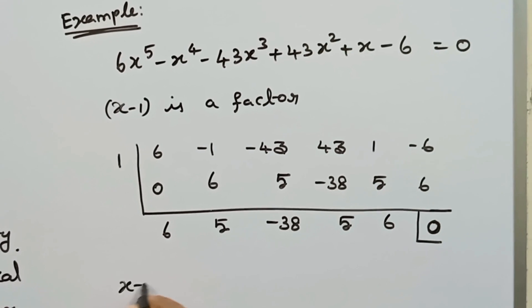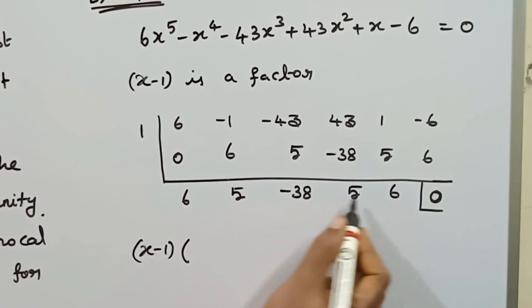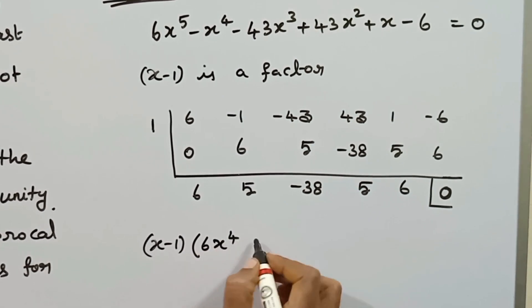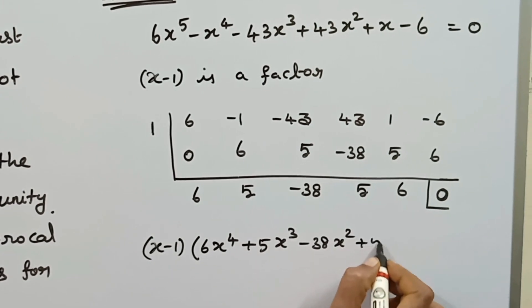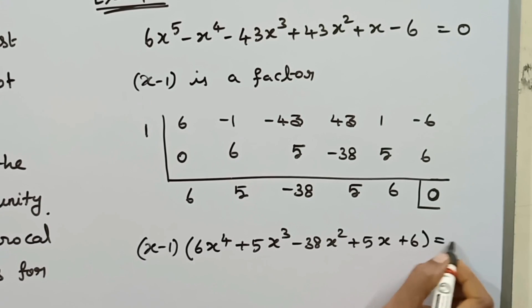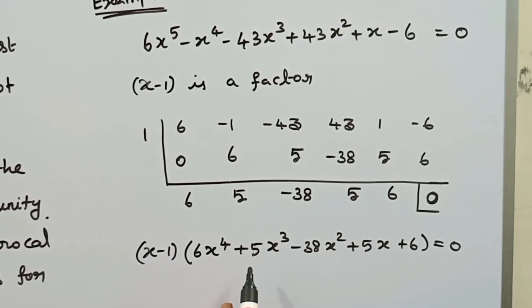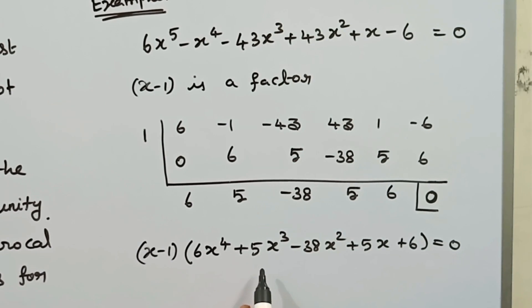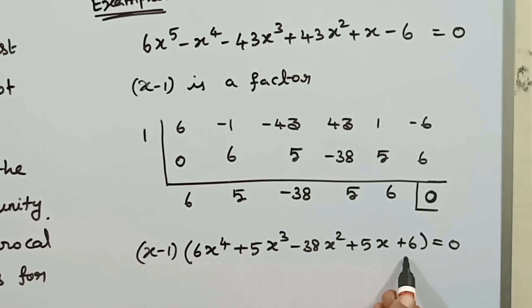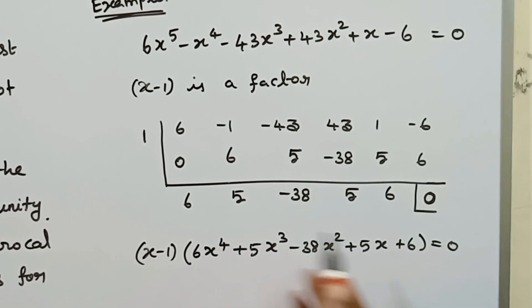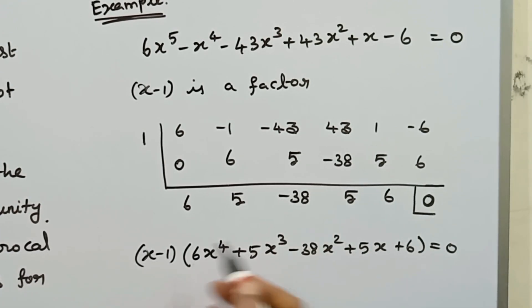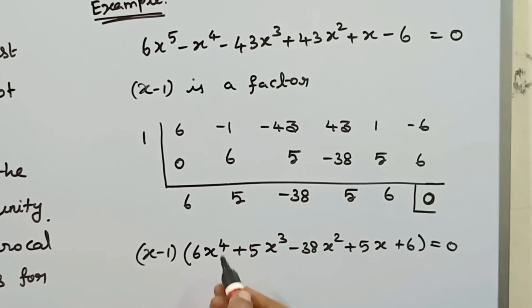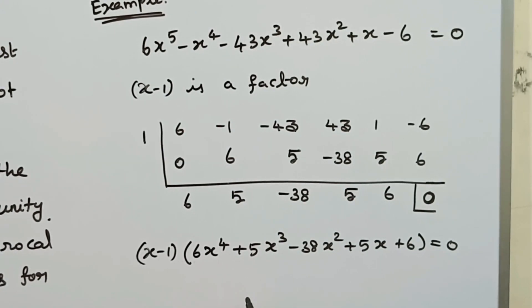The given equation factors as x minus 1 into 6x to the power 4 plus 5x cubed minus 38x squared plus 5x plus 6 equal to 0. This depressed equation is an even degree like sign reciprocal equation — the standard form. So odd degree unlike sign is converted to even degree like sign.